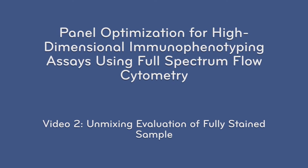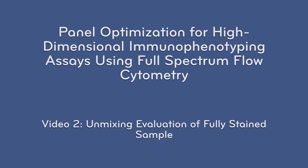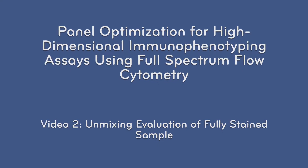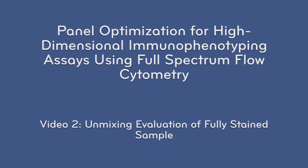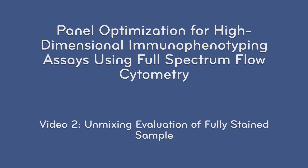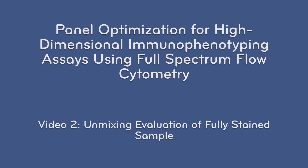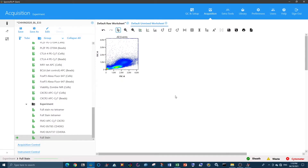This video is designed to accompany the protocol 'Panel Optimization for High-Dimensional Immunophenotyping Assays Using Full Spectrum Flow Cytometry.' This is video 2, which follows Basic Protocol 2: unmixing evaluation of fully stained sample. I've just unmixed my data as described at the end of video 1, which was the end of Basic Protocol 1.